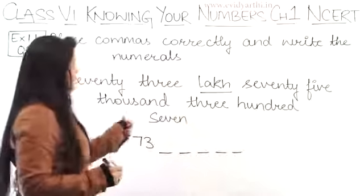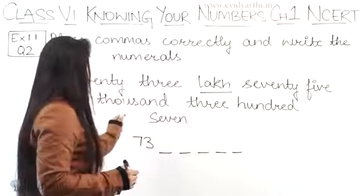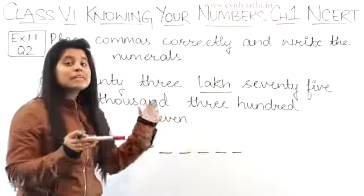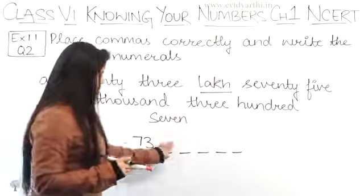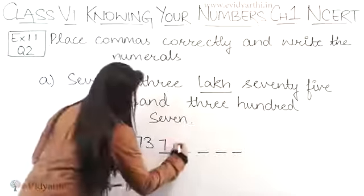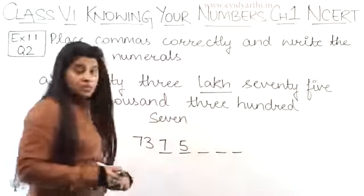Next, we are going to do 75,000. Now, 75,000 means 3 digits. So if I am going to do 75 here, then there is a 3 digit space. So this will be 75,000.